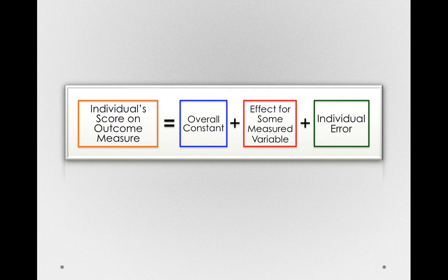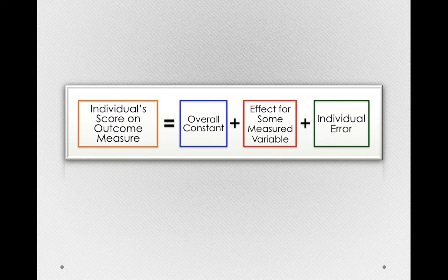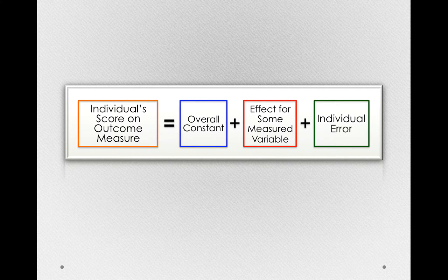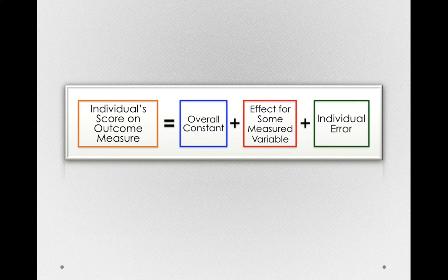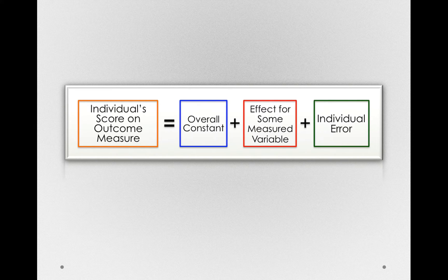That is, we won't be able to perfectly represent an individual score simply on the basis of that overall constant and the effect of a measured variable. People will differ from that sum of the overall constant and the effect of the measured variable. And this reflects all the things we didn't actually measure.